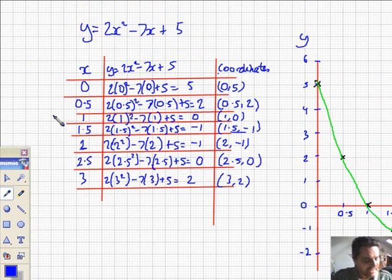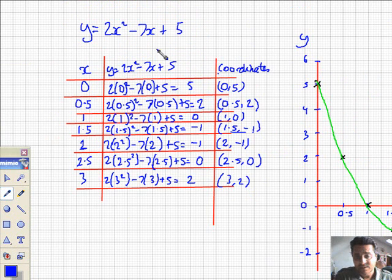It says I've got to copy and complete this table for values of y equals 2x squared minus 7x plus 5. So essentially, I'm plugging the values from 0 to 3 into where you see the x in the equation, calculate the y's. We've done this loads of times before.